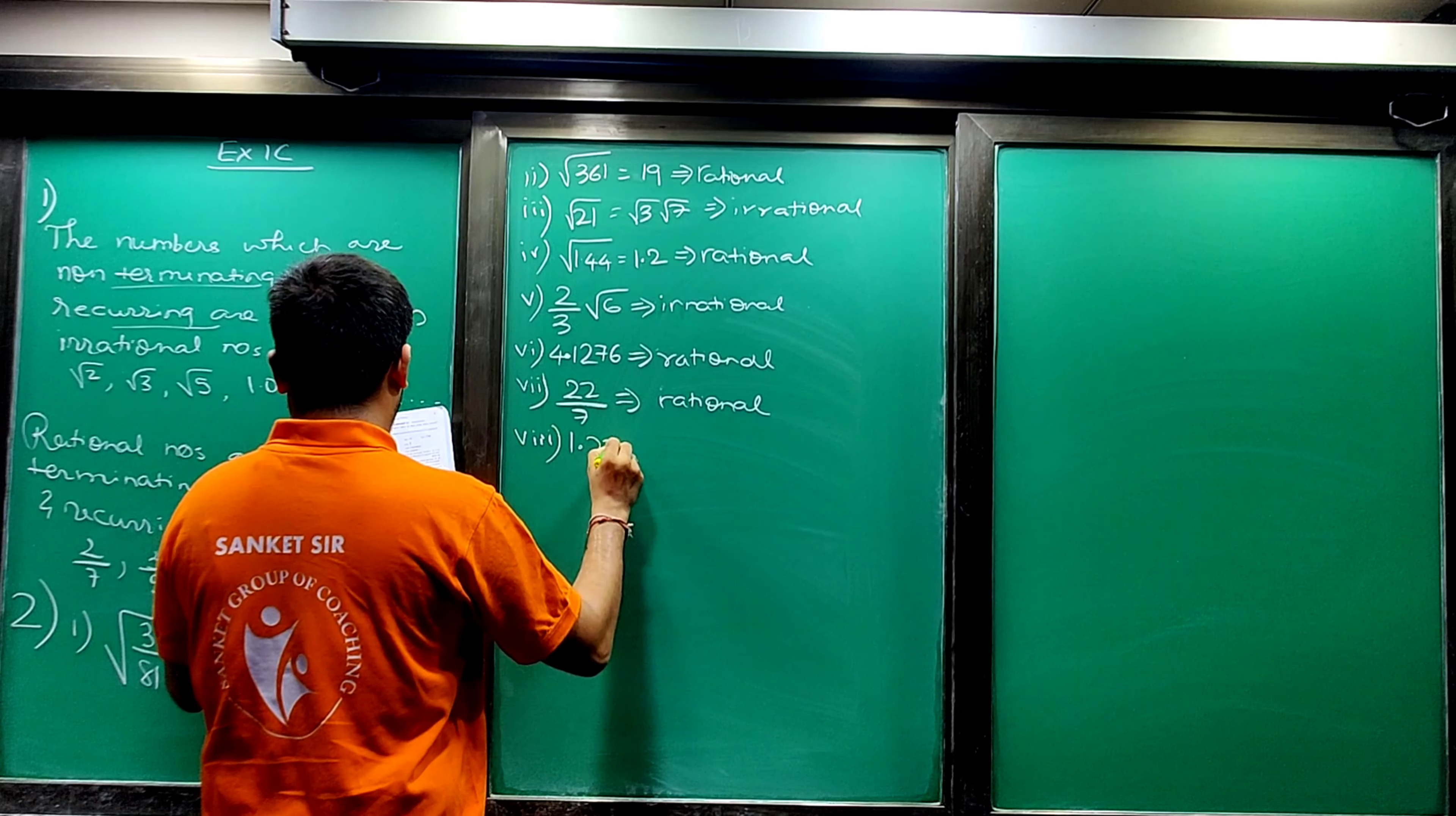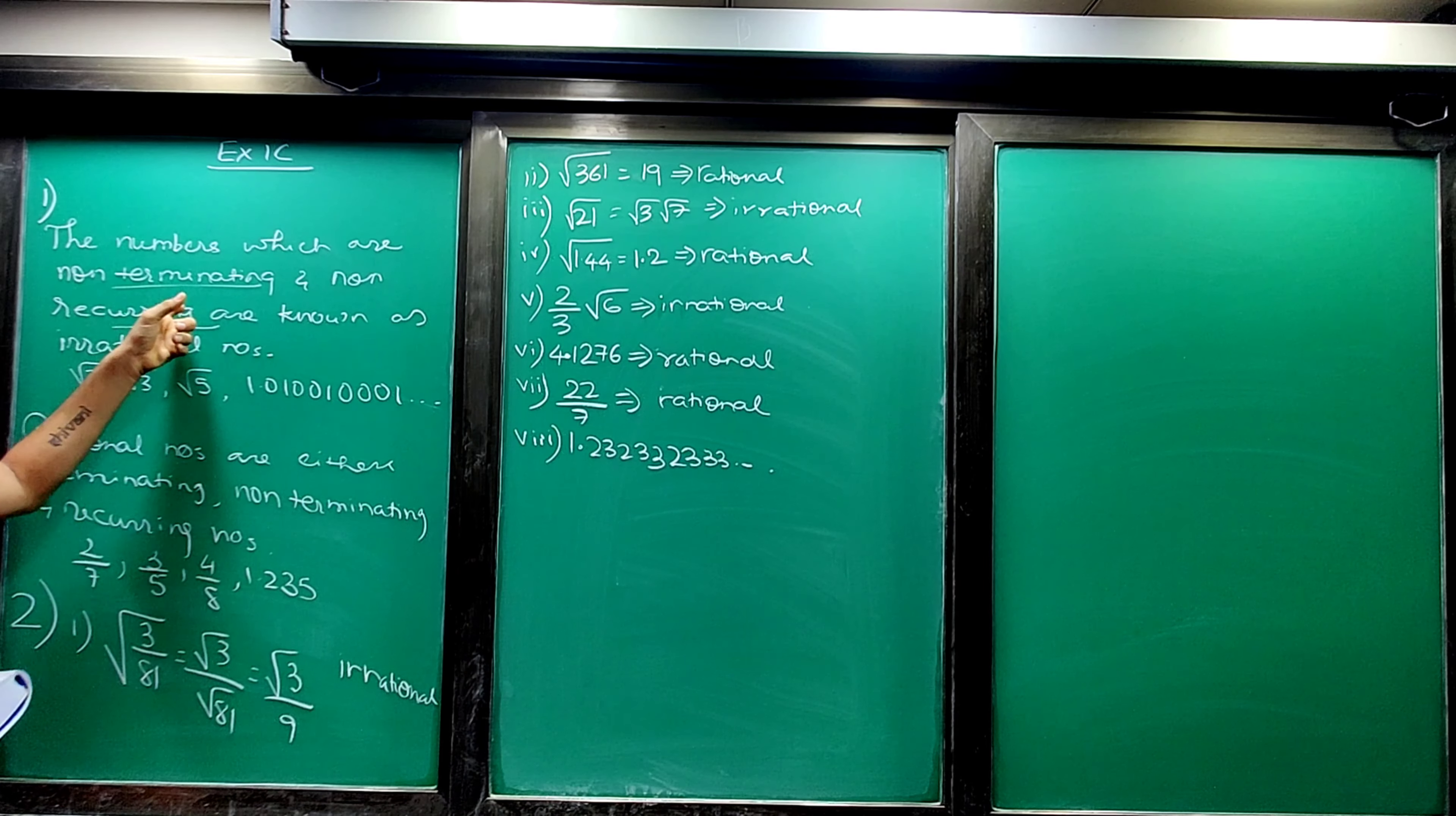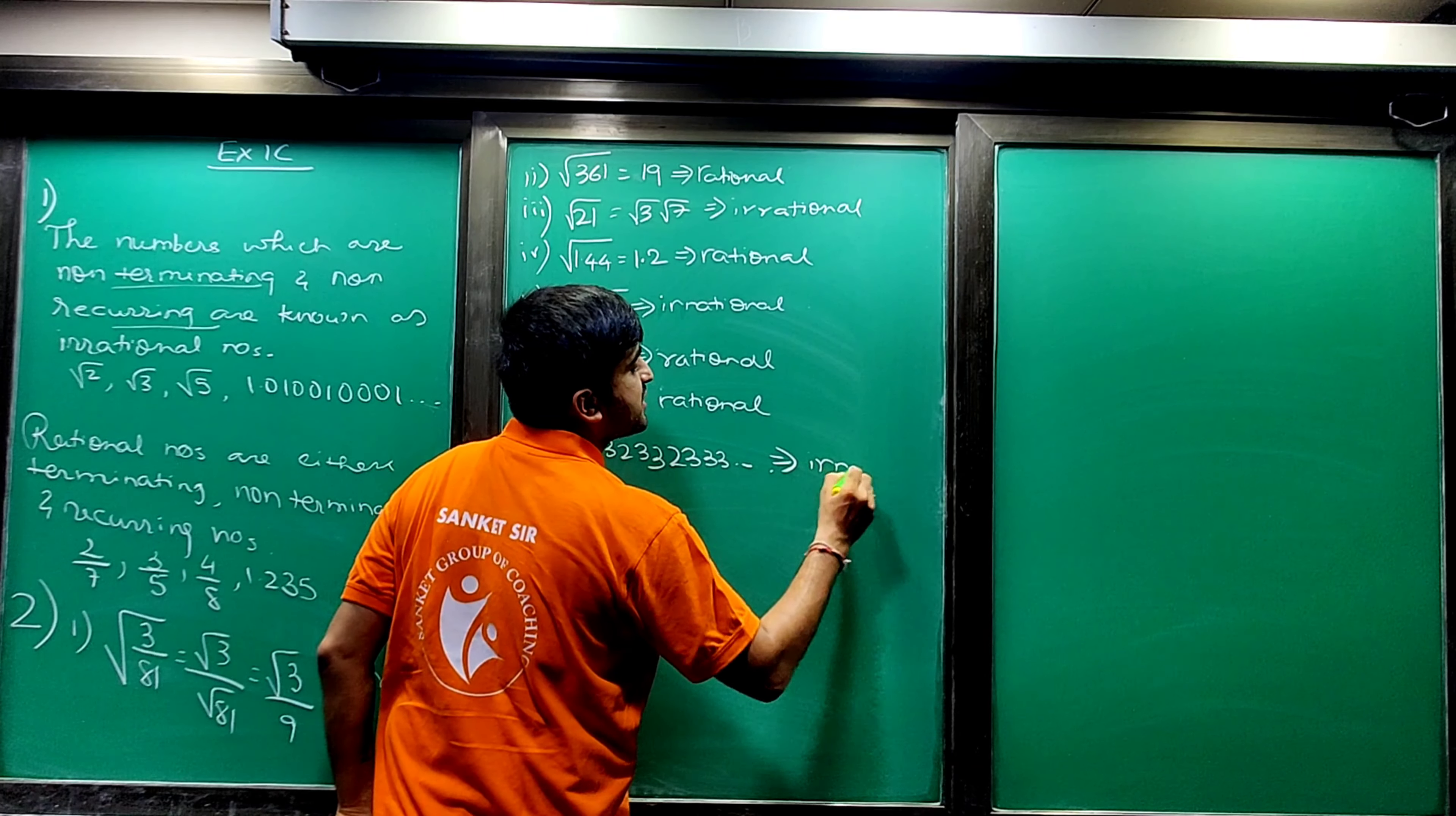Eighth: 1.23, 233, 2333 and so on. This is how we have an example here. So how is this number? Non-terminating and non-recurring, and hence it is your irrational number.